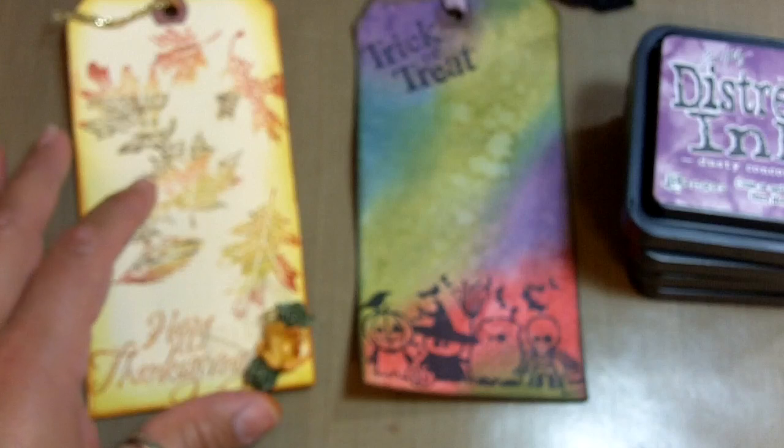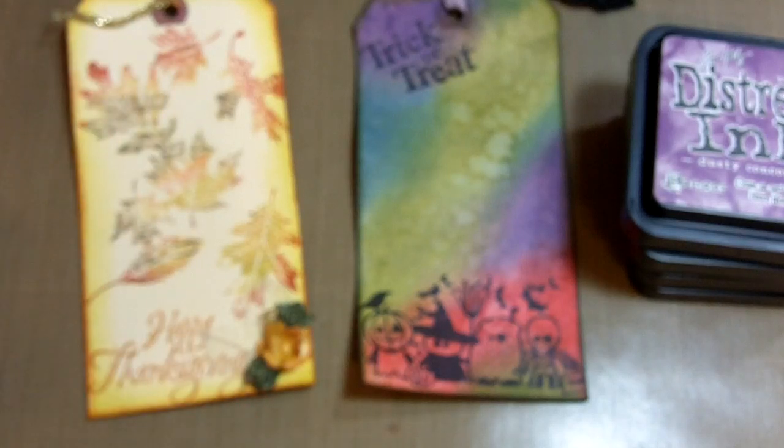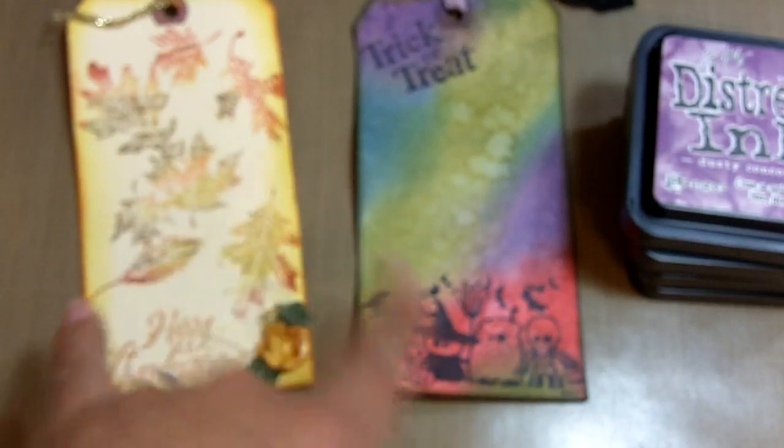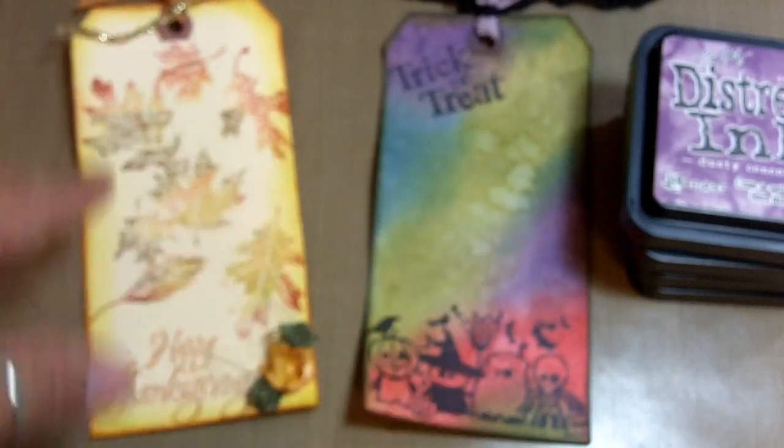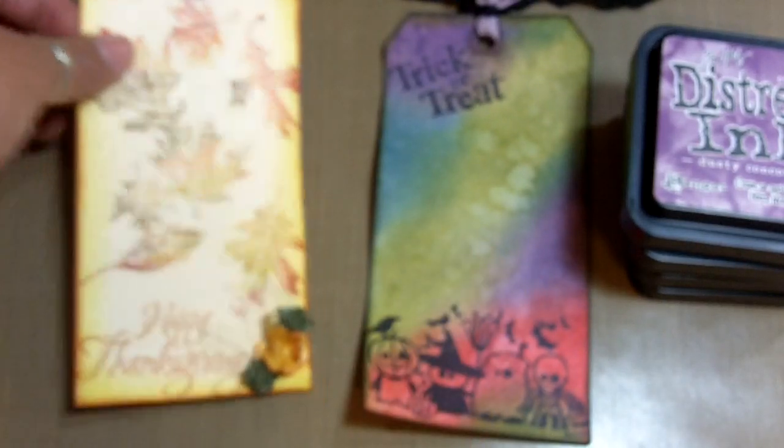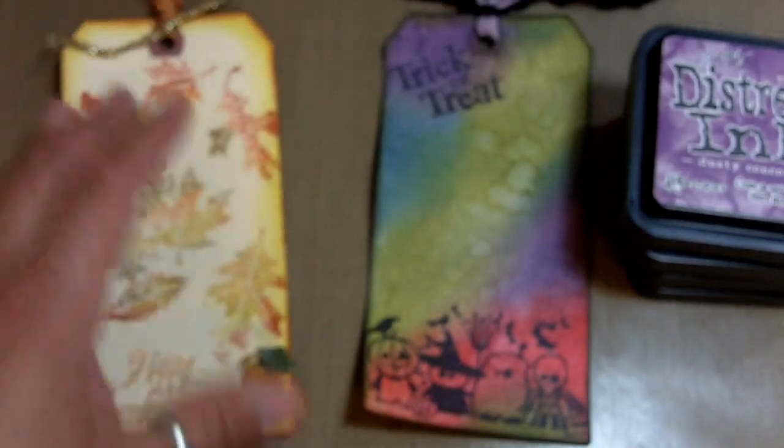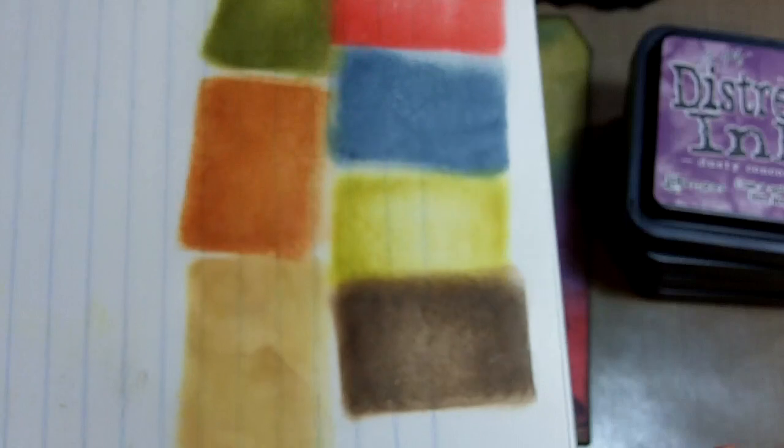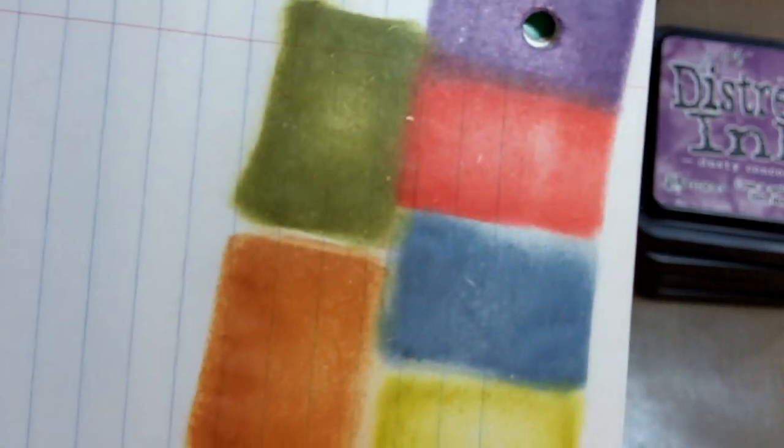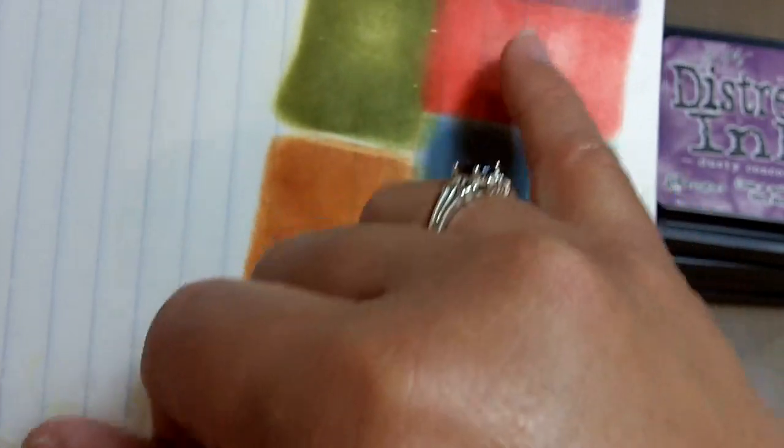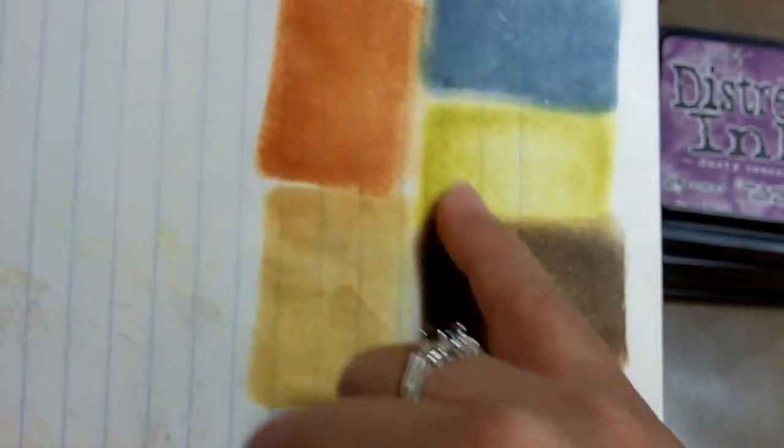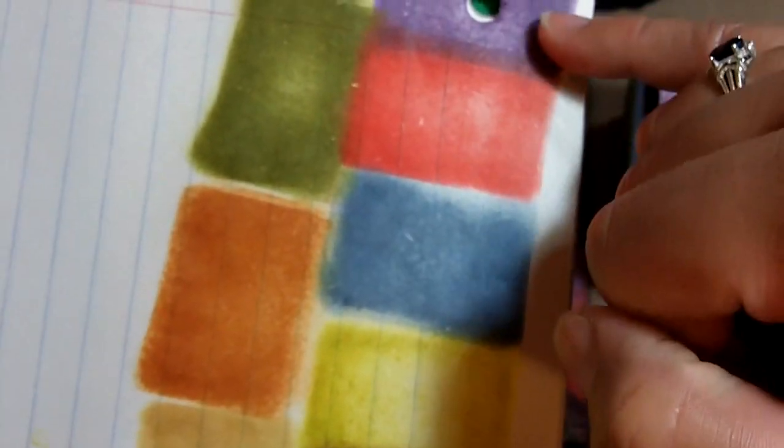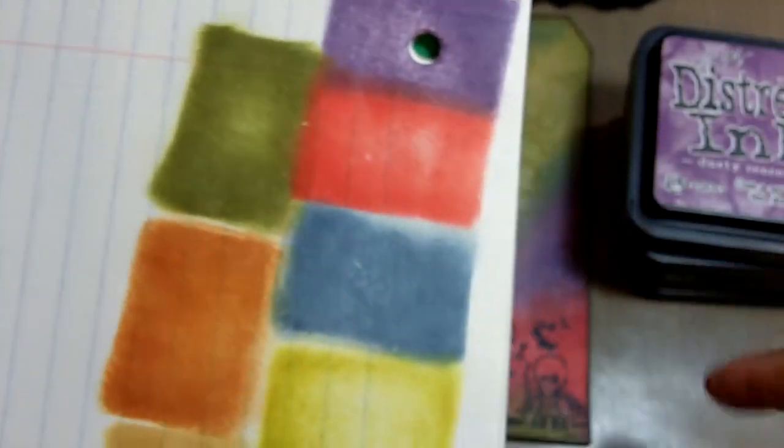And I have here, I made 12 of these. So I'm part of this tag swap that Velma's hosting. Hi Velma. And we're to make 24 tags. So I did 12 each of, 12 of each kind of tag here. I did a Halloween theme and then an autumn theme or a Happy Thanksgiving type of thing. So I went ahead and just stamped these down on this notebook paper that I have. And I just want to show you the colors. This red and then the green, these are the ones that I use for the fall. And then these four here for the Halloween tag.